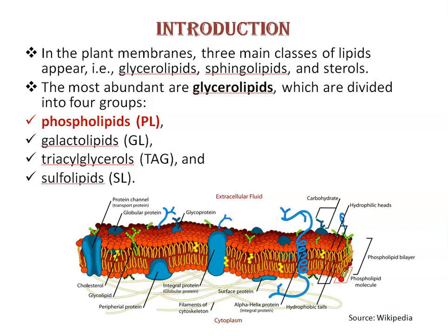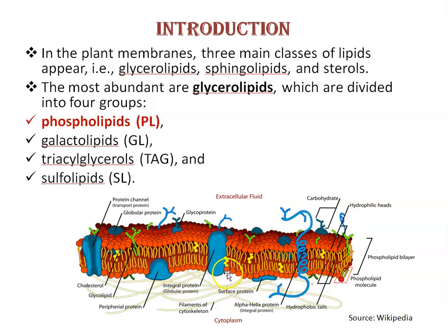Cell membrane is made of lipids and proteins. Just look at this diagram — this is a structure of the cell membrane. You can see here, these are lipids and these are proteins, shown in blue. Proteins are of two types: peripheral proteins and integral proteins. Peripheral proteins are attached to the surface of the membrane but not embedded in it. Integral proteins are embedded in the cell membrane.